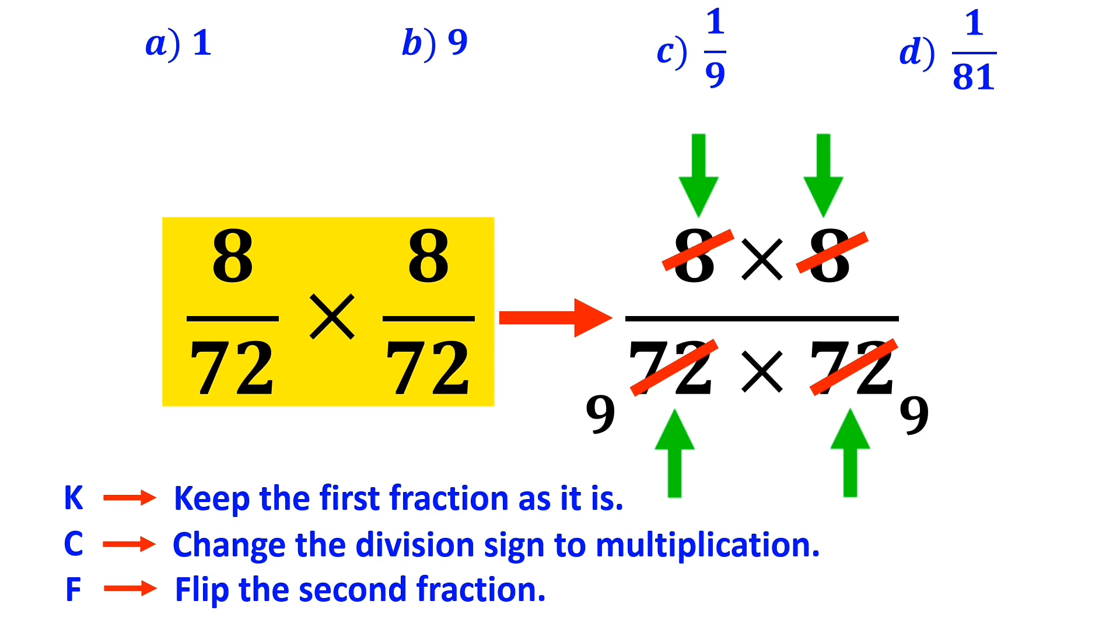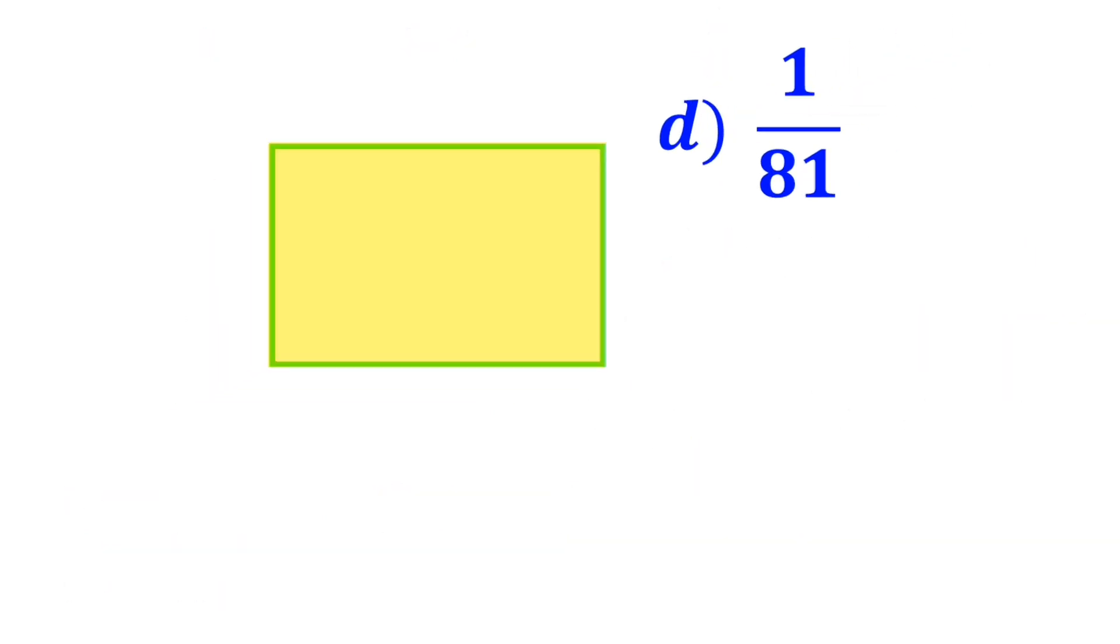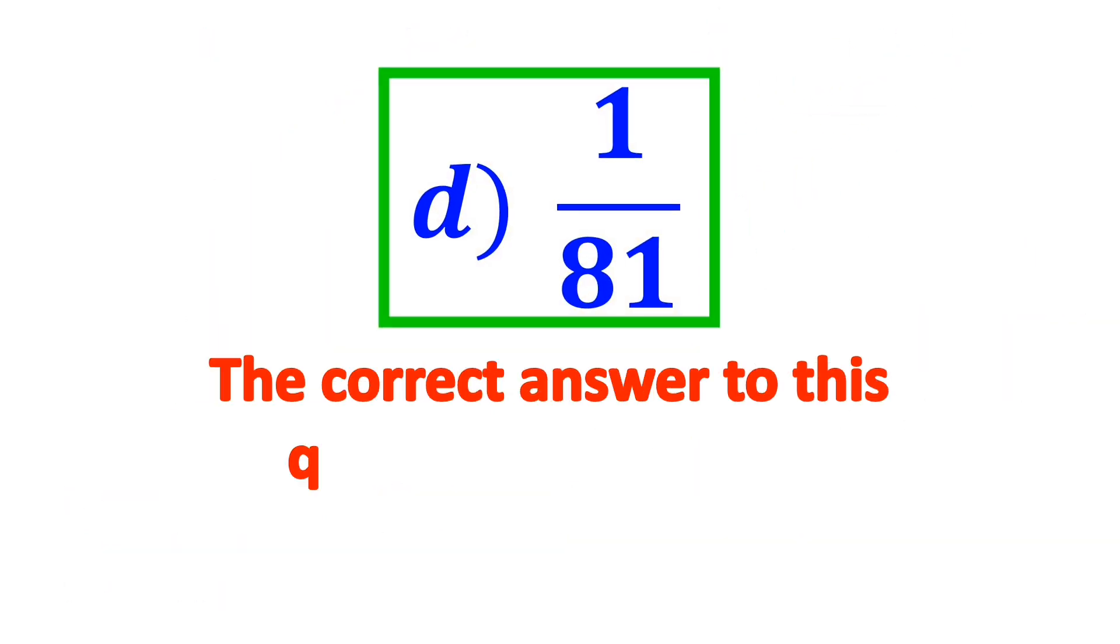Finally, the result of this fraction simplifies to 1 over 81. So, the correct answer to this question is option D.